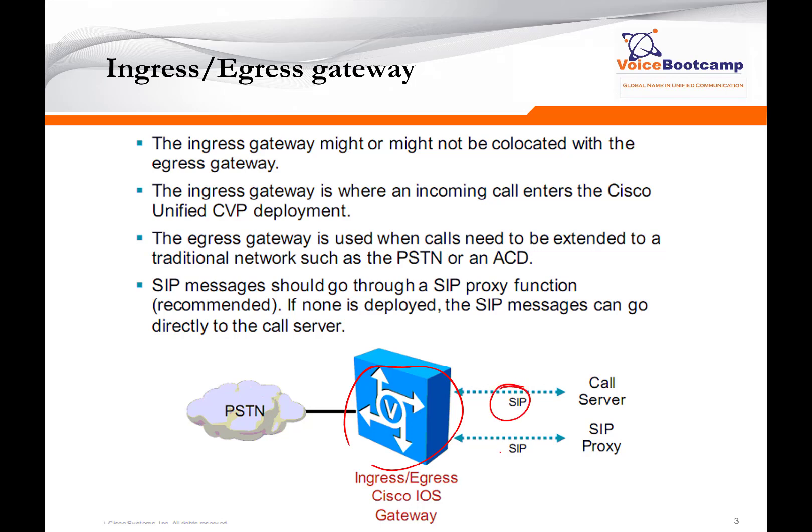You could use a choice of protocol, for example SIP, to route a call from the Ingress Gateway to the CVP server.